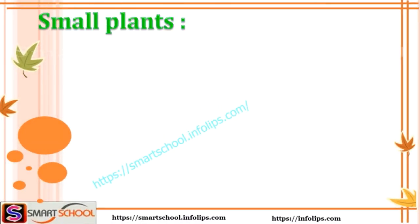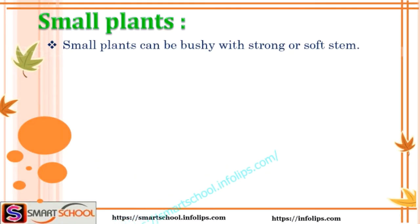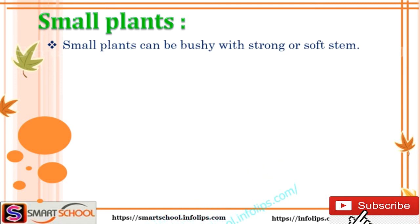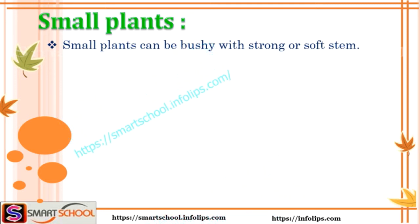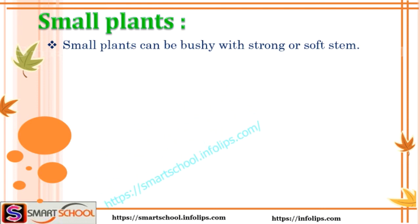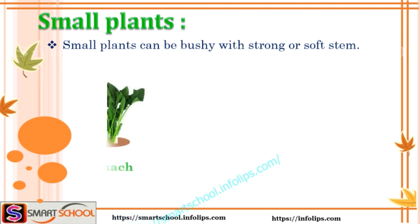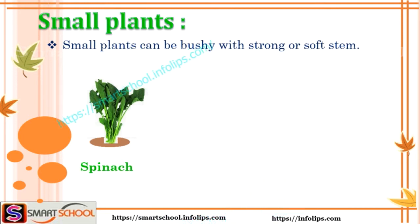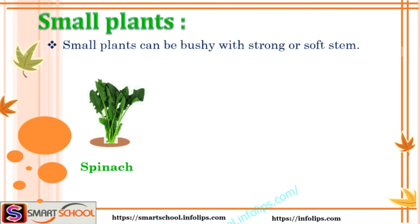Let's see the second type: small plants. Small plants can be bushy with a strong or soft stem; they mostly have a soft stem. The first example of a small plant is the spinach plant.